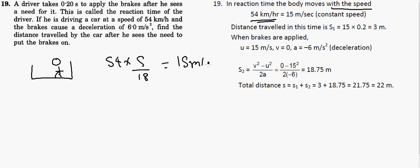That's the constant speed. Distance traveled in this time is 15 × 0.2. Why 0.2? Because it takes 0.2 seconds to apply the brakes—that was the reaction time.